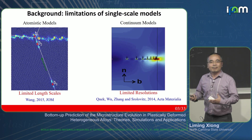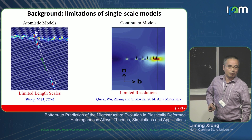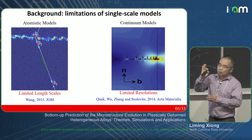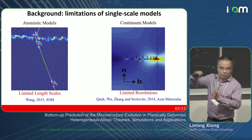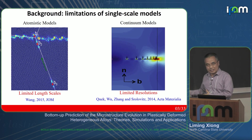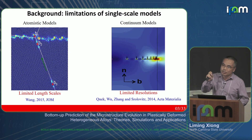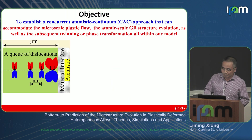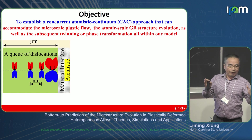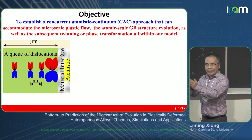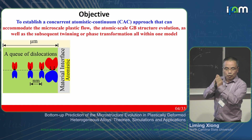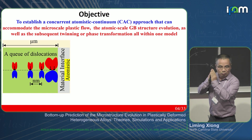We want to scale up and evolve tens or even hundreds of dislocations, so we can use a continuum model. Many continuum models exist, but a continuum model does not provide atomic information on the grain boundary — you can only assume a grain boundary is a strong or weak barrier. You have to tell the solver how the reaction will happen. I call this a limited resolution, because you don't have enough resolution on the grain boundary. We want to develop a tool that can accommodate many dislocations away from the grain boundary but also retain the atomic structure on the grain boundary.